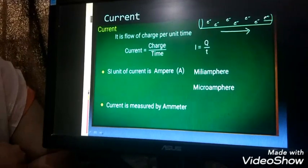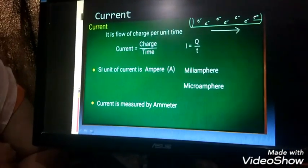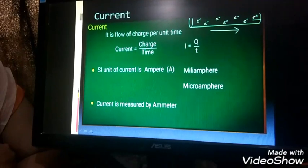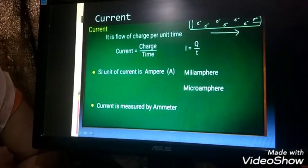And the smaller units are milliampere and microampere. Milliampere is equal to 10 to the power minus 3 ampere, and microampere is equal to 10 to the power minus 6 ampere.